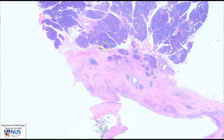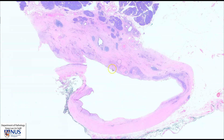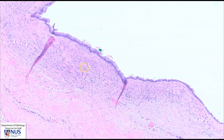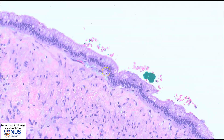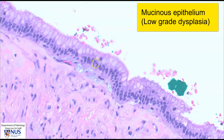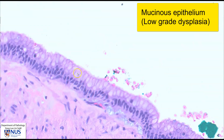Now let's move to the area of pathology. Here we can see one of the locules of this cystic neoplasm, and the epithelium lining the cyst locule is columnar. The nuclei are very basal and polarized, and in this area they are extremely uniform.